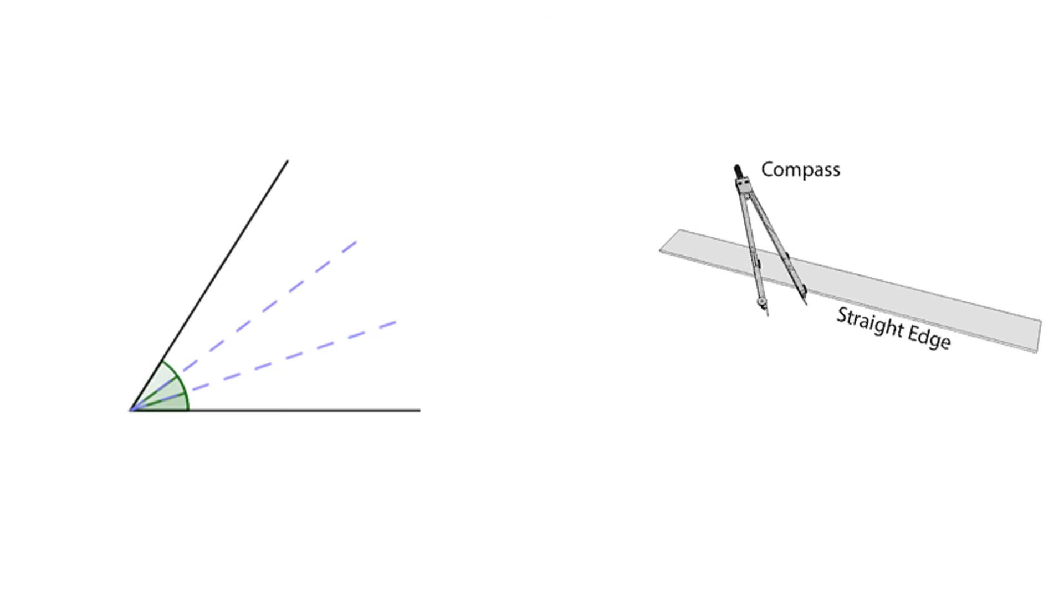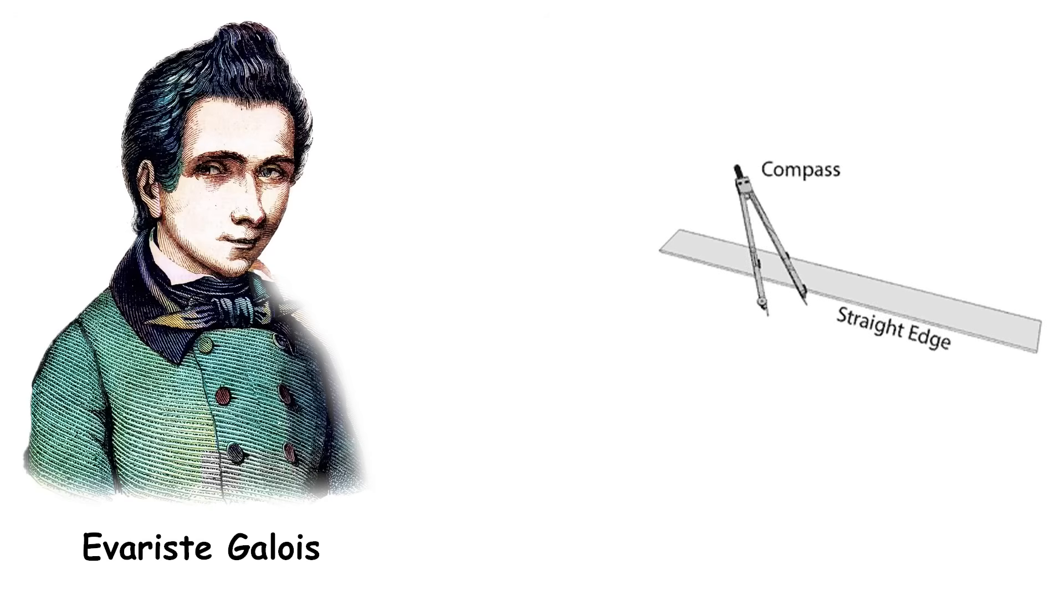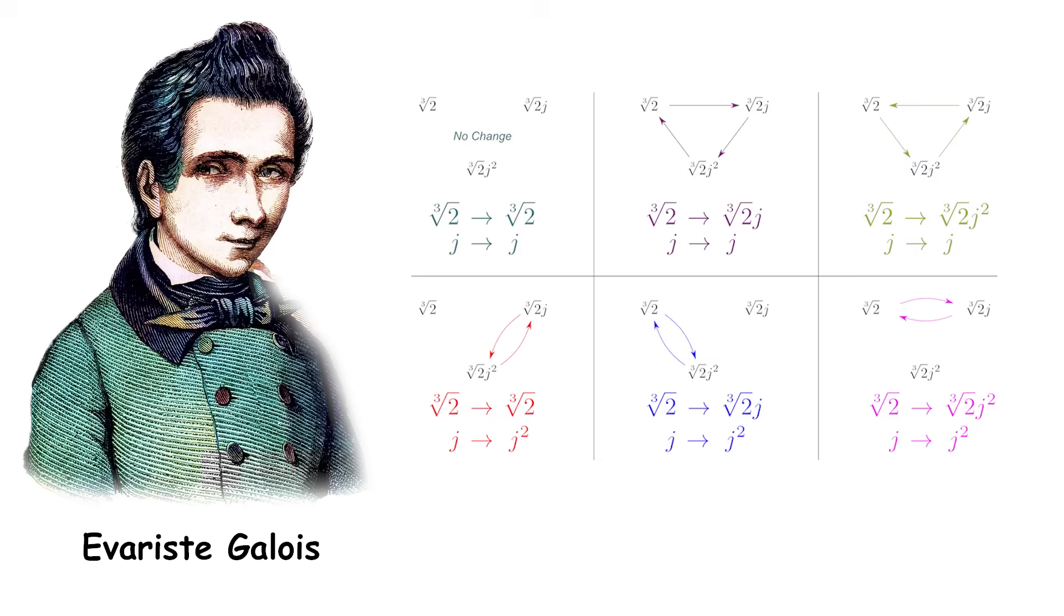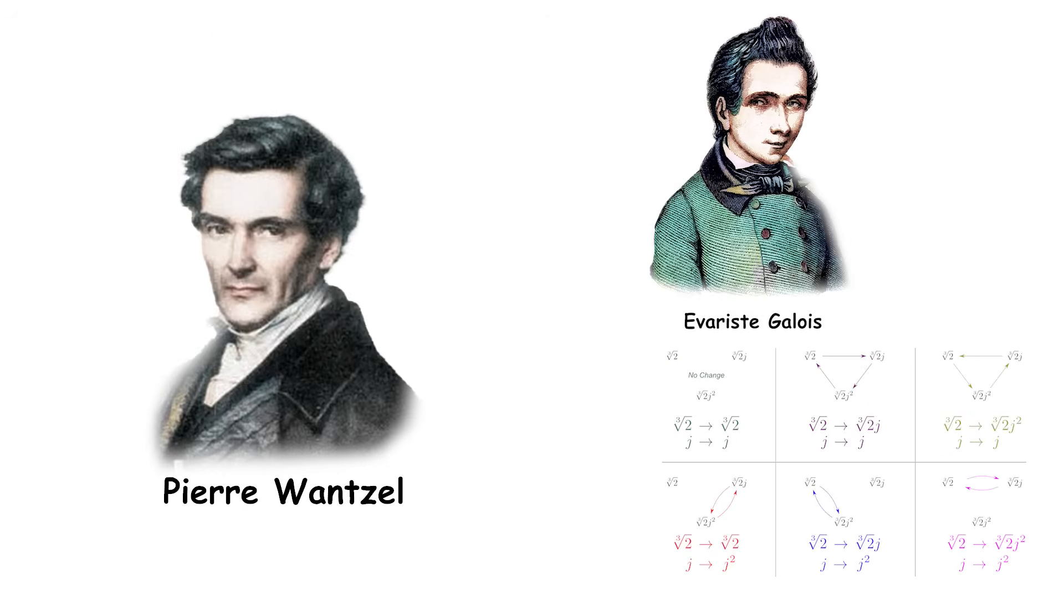This was proven in the 1800s by two French mathematicians. Évariste Galois developed a whole theory that explained the conditions under which geometric constructions are possible. Pierre Wantzel published the first proof that angle trisection is impossible. Their insights showed that the inability to trisect an angle is related to the properties of certain mathematical equations. This closed off one of the oldest unsolved problems in mathematics.